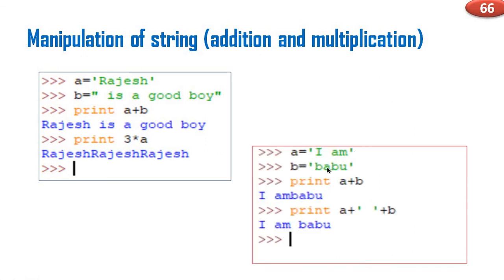Consider a second example: a = 'I am' (inside quotes, so it's a string), b = 'Babu'. Print a + b. The result is the string 'I amBabu'. If you want a space between them, you need to include it — print a + ' ' + b, giving 'I am Babu'.